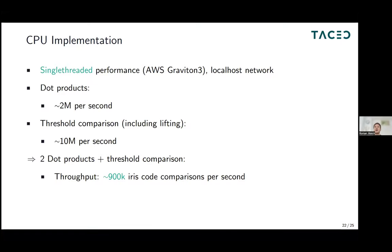For performance, we implemented on CPU and benchmarked on AWS with three parties connected via localhost network. The dot products achieve a throughput of approximately 2 million dot products per second. For the MSB extraction threshold comparison, we get a throughput of about 10 million per second. Combining these for the whole protocol, we achieve about 900,000 iris code comparisons per second — already a huge improvement over the IANOS protocol from academic literature — but still not quite enough for a nice throughput for the WorldCoin infrastructure.